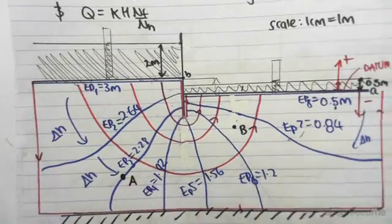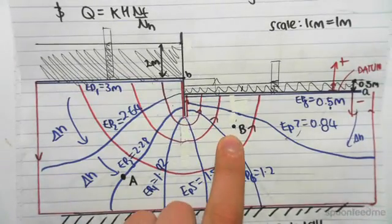So once again, here's our flow net, and we're going to be finding the hydraulic gradient at point B.